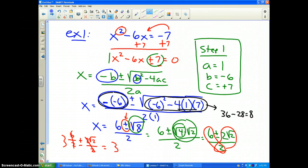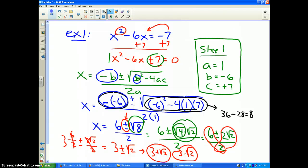Making my final answer 3 plus or minus the square root of 2, which breaks up to 3 plus the square root of 2 is one of my answers, and 3 minus the square root of 2 is the other answer. And that is how you use the quadratic formula to solve a problem.